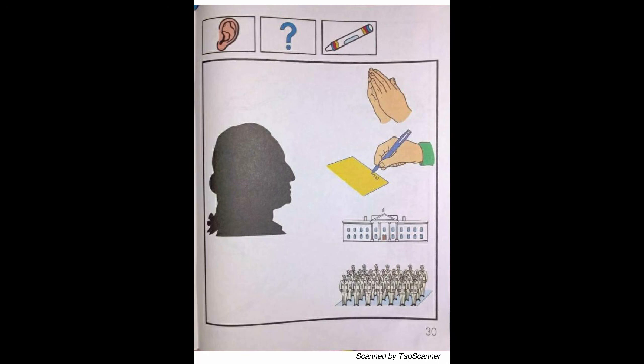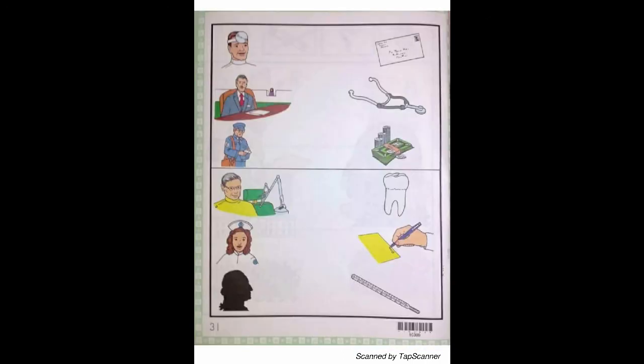Think: Is Mr. President a helper to our whole country? What is the name of Mr. President's special house in America — the White House in Washington? Is Mr. President an important man? Draw a line from the president to someone signing a law. With your blue crayon, draw a line from the president to the soldiers. With your red crayon, draw a line from the president to the White House. With your green crayon, draw a line from the president to the praying hands.